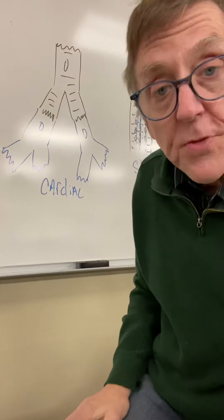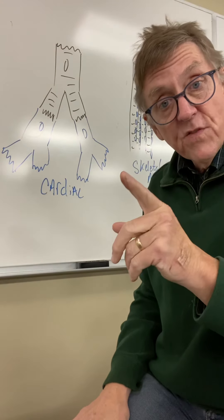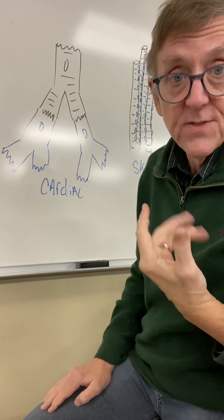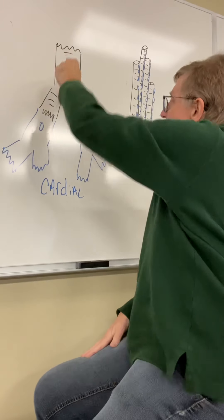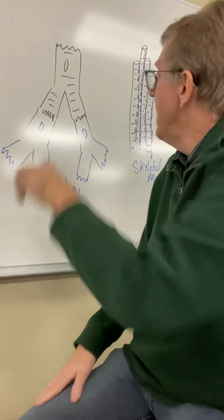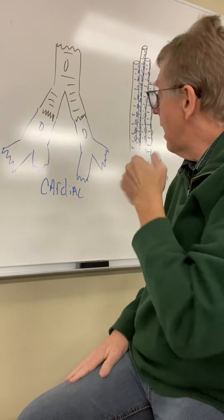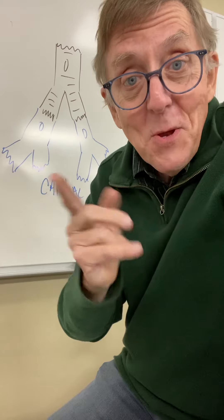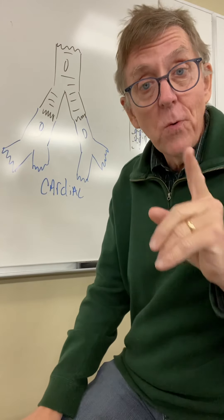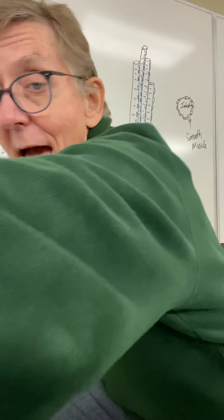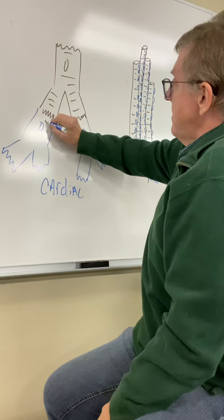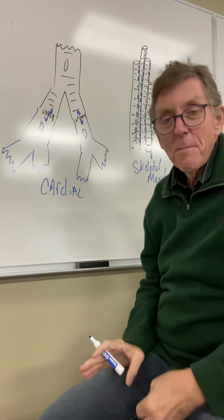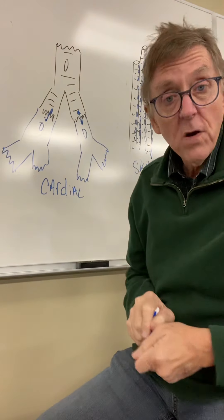I've drawn three cardiac cells up here. Remember, these cells are more normal-sized, but they don't really look like what you typically think of as a cell. You can see that each cell has a single nucleus. They're striated and they're branched. They also communicate with each other through something called gap junctions — small openings that allow for the exchange of chemistry between adjacent cells.